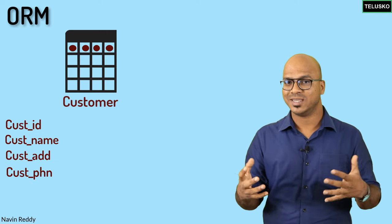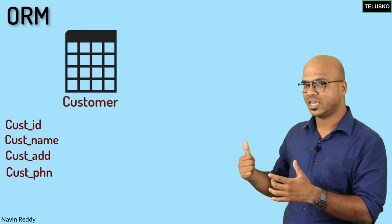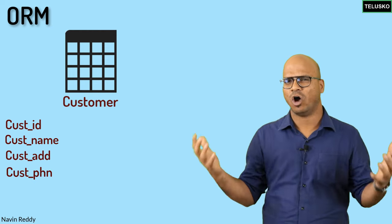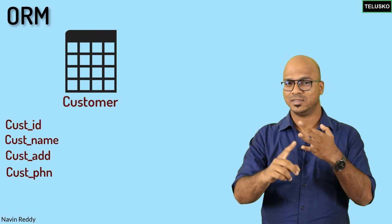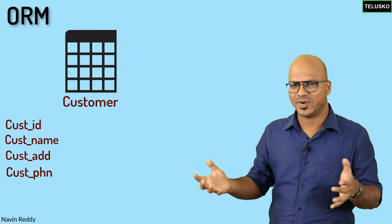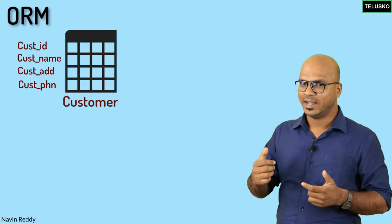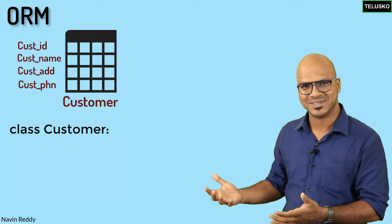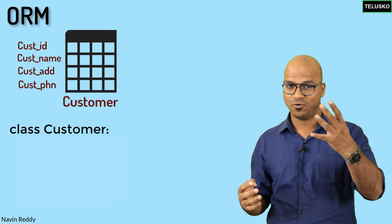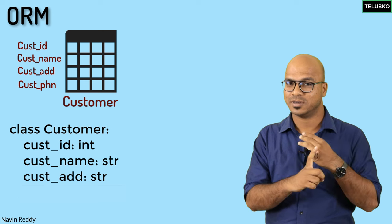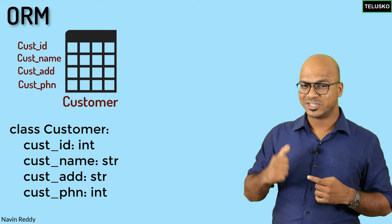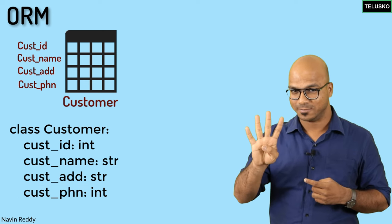On the other hand, if that application is built in any object-oriented programming language — maybe C#, Java, or Python — it will have a class, because that's how you create an object. To create an object you need a class. So of course you will have a Customer class, and that Customer class will have four fields: customer ID, customer name, customer address, and customer phone number. So in the database the customer table has four columns, and the class here has four properties.